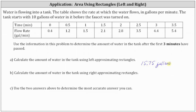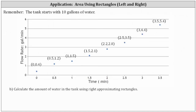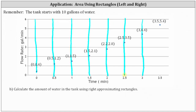Now we're going to do a similar process, but use right approximating rectangles. Again, we mark off the interval from 0 to 3 minutes and mark off subintervals every 0.5 minutes. The only difference is we use the point on the right of each subinterval to determine the height. For the first subinterval, the height is 1.2. For the second, the height is 1.5. For the third, the height is 2.1. For the fourth, the height is 2.8. For the fifth, the height is 3.5. And for the sixth rectangle, the height is 4.4, again from the point on the right.